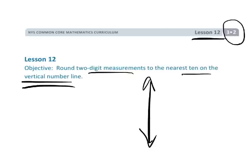If it's 32 you underline the three because that's the tens place, then you put a check mark here and you say if it's five or higher you round up, and if it's four or lower you round down.